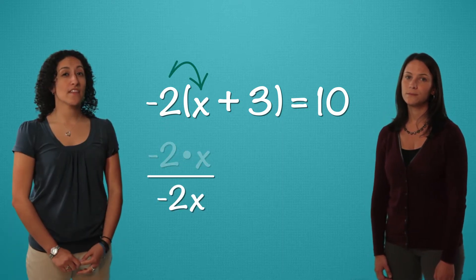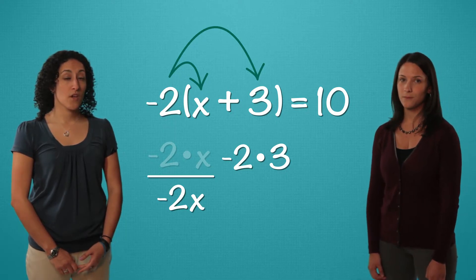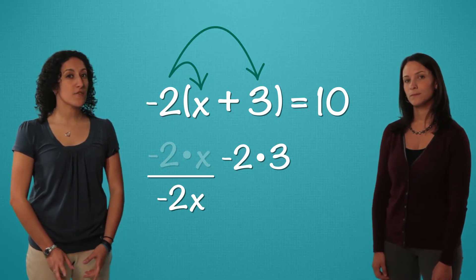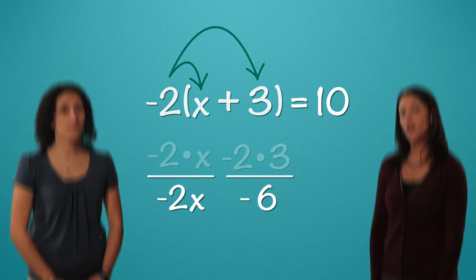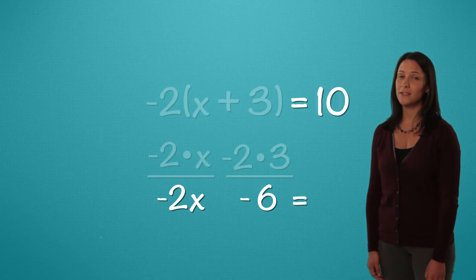We also multiply the negative 2 by this positive 3. A negative times a positive makes a negative. So negative 2 times positive 3 equals negative 6. Then we have negative 2x minus 6 and we bring down the equal sign and the 10.